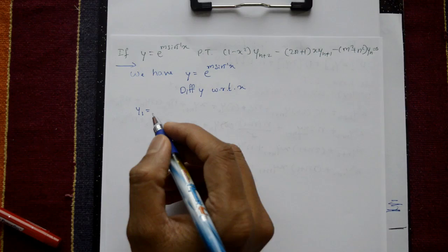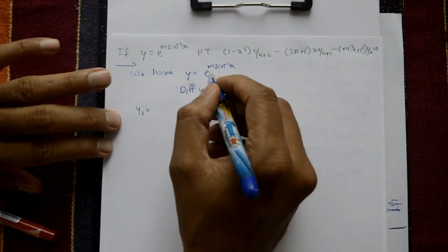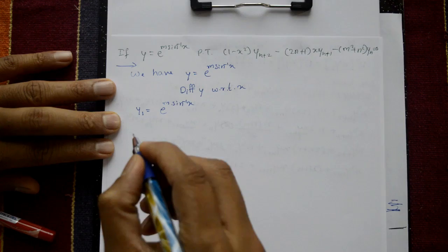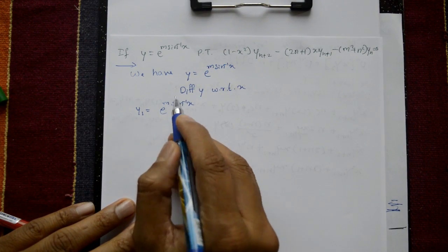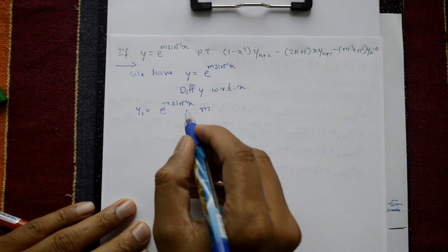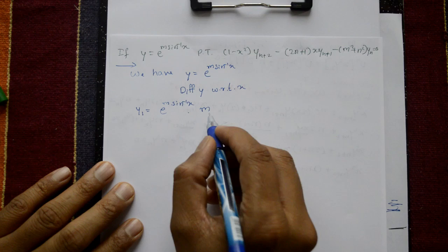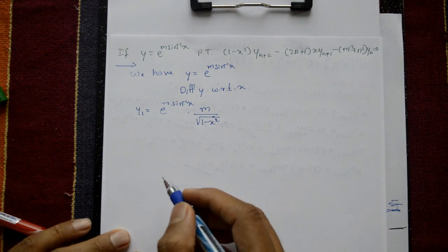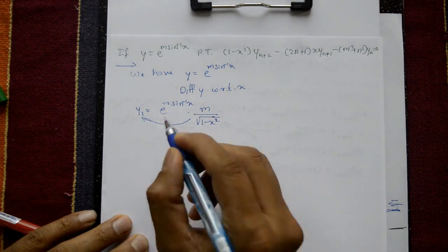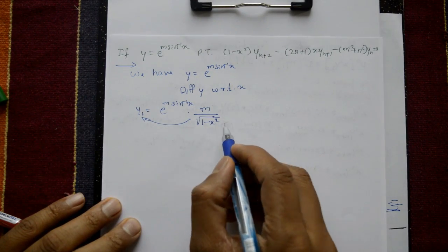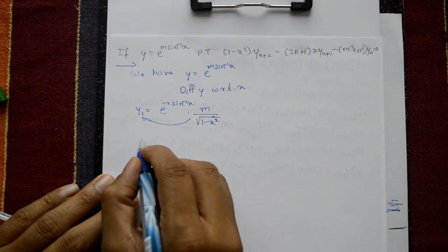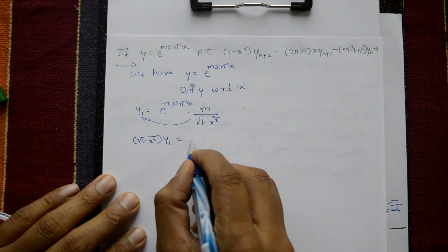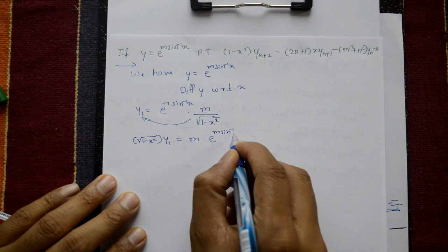Generally, e to the power x differentiate, we get e to the power x. So, differentiating, we get e raised to the power m sine inverse x. Again, differentiate m sine inverse x. m is a constant, differentiation of sine inverse x is 1 upon square root of 1 minus x square. Take the whole equation, multiply by square root of 1 minus x square. We get square root of 1 minus x square · y1 equal to m into e to the power m sine inverse x.